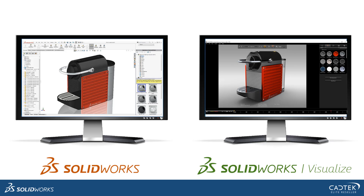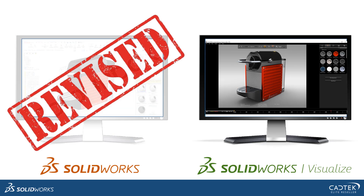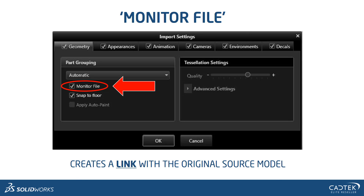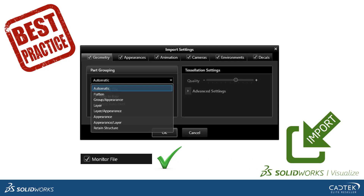What happens if you're modeling in SOLIDWORKS and using it in Visualize, but then the SOLIDWORKS data gets revised? This is really important. When importing your data, make sure you've got the Monitor File option ticked. This creates a link with the original CAD data so that if the CAD data changes, it will flag it up in Visualize. Then you can just do a reimport and it leaves all your settings the same. So best practice when importing is to use the Automatic selection with Monitor File ticked as well.